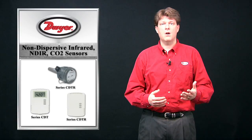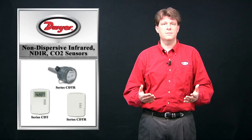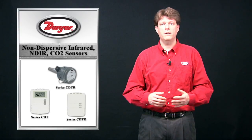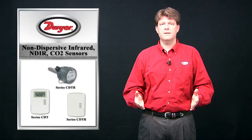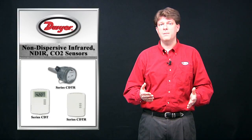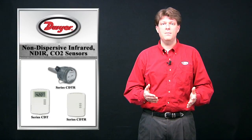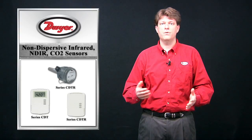Carbon dioxide sensors are commonly used in building automation systems to monitor air quality. The level of carbon dioxide is indirectly proportional to the amount of people in a space and can be used to adjust ventilation for the space.